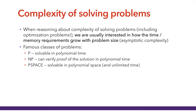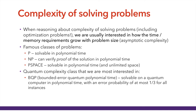Classically, the most famous complexity classes are P — problems solvable in polynomial time — NP, non-deterministic polynomial, where we can verify the proof of the solution in polynomial time, and PSPACE, solvable in polynomial space and unlimited time. On the quantum side, the complexity class we are most interested in is BQP, bounded error quantum polynomial time, which includes problems solvable on a quantum computer in polynomial time with an error probability of at most one-third for all instances.